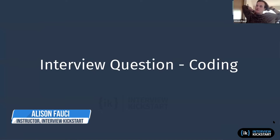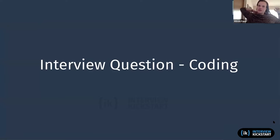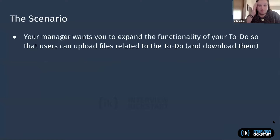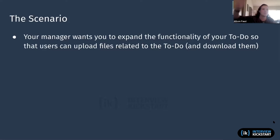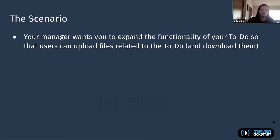We're going to talk through a coding example and show a little bit of code to drive this home. Say you have a new functionality you want to add to a to-do app — you want to make it so you can upload files related to your to-do and download them. Mostly it's important to have them pushed up to the cloud, kind of like a Dropbox experience but tied to your to-do item.